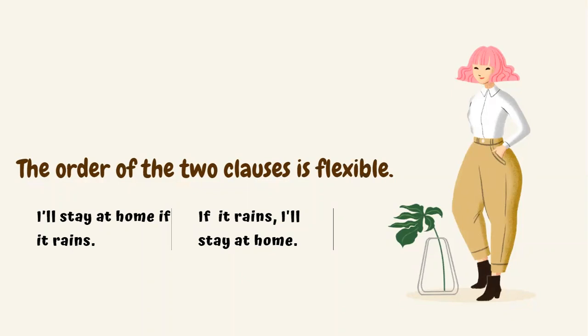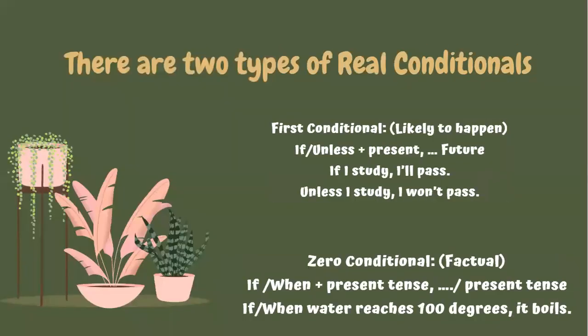The order of the two clauses is flexible. For example, you can say either 'I'll stay at home if it rains' or 'If it rains, I'll stay at home.' There are two types of real conditionals: the first conditional and the zero conditional.